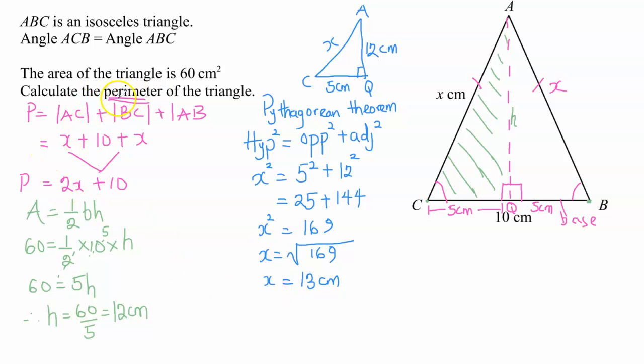What we are asked to obtain is the value of the perimeter of the triangle, and we found that to be 2x plus 10. Now I've obtained the value for x, I'm just going to substitute. So this is going to be 2 times 13 plus 10, which equals 26 plus 10. Therefore, the perimeter of this triangle is equal to 36 centimeters.